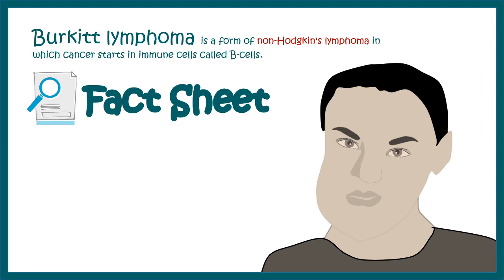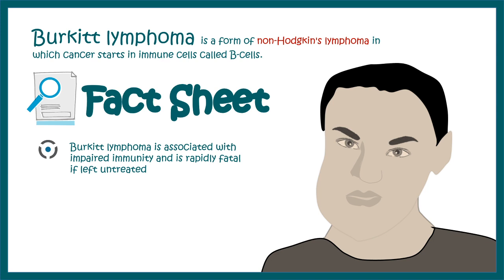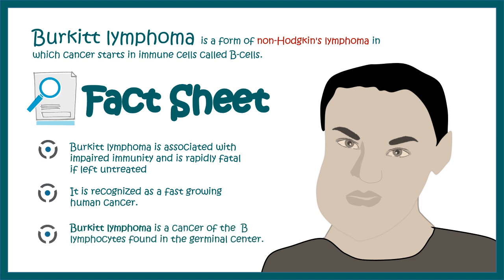Let us quickly revise the key facts associated with Burkitt lymphoma. It is associated with impaired immunity and is one of the most aggressive cancer forms in humans. Burkitt lymphoma affects B cells, and its characteristic facial feature — a swollen jaw — is characteristic of the African form of Burkitt lymphoma.